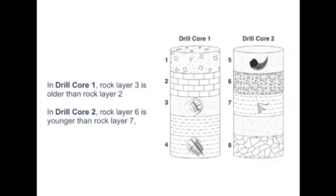In this diagram, in drill core 1, layer 3 is older than layer 2 because layer 3 is below layer 2. In drill core 2, layer 6 is younger than rock layer 7 because layer 6 is above rock layer 7.